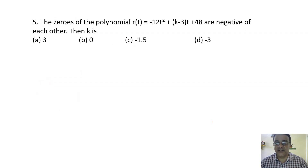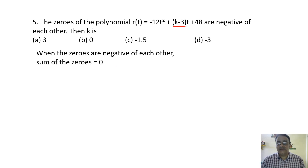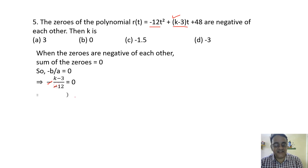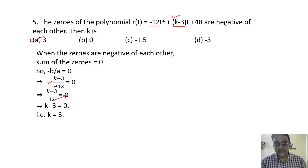The last question: the zeros of polynomial R of t equals minus 12t squared plus k minus 3 into t plus 48 are negatives of each other. This means the sum of zeros is zero. Using the formula sum equals minus b by a: minus of k minus 3 upon minus 12 equals zero. Simplifying: k minus 3 upon 12 equals zero, so k minus 3 equals 0, giving k equals 3. Correct option is A. That completes all case study questions from polynomials chapter.